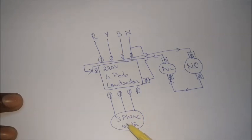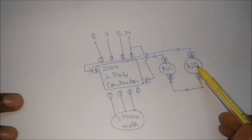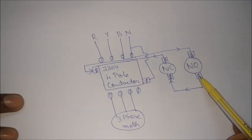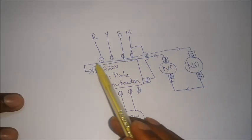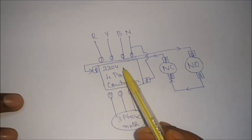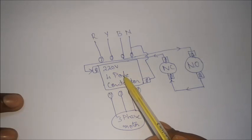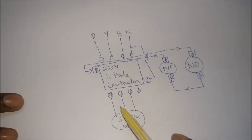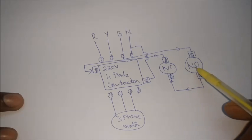But we have a problem here. Once the NO switch is released, current from here does not flow out of this point. Hence there is no current here to activate this solenoid coil inside the 4-pole contactor. Hence the link breaks and the motor goes off. So you cannot keep your finger always pressed on this.